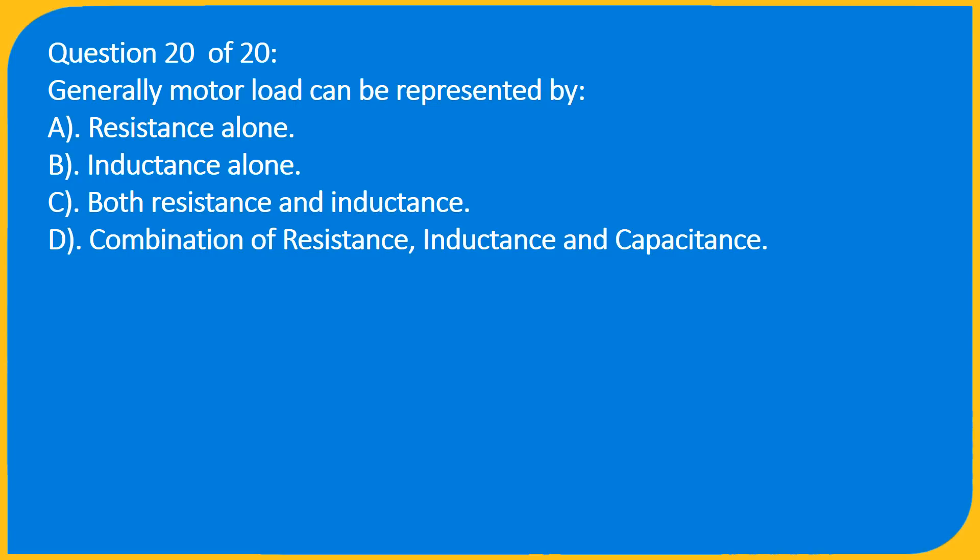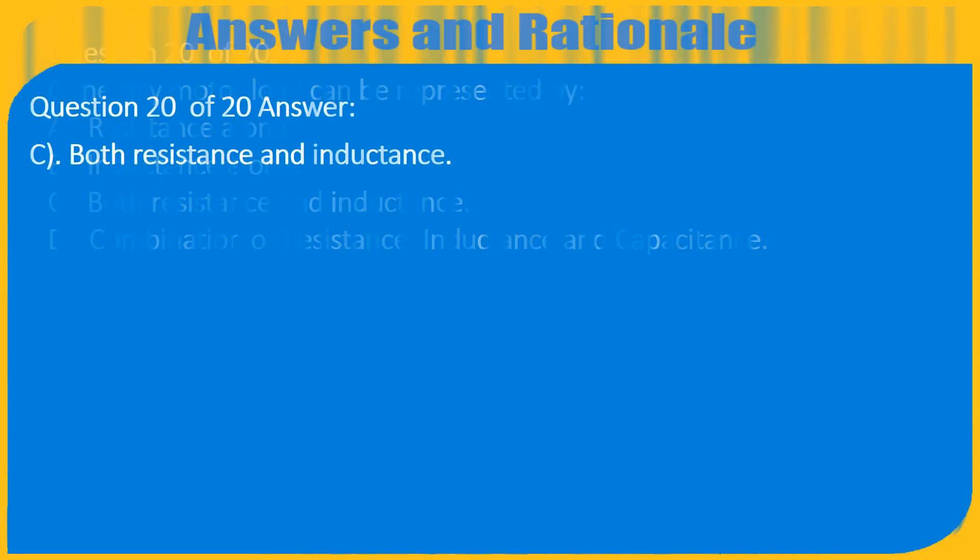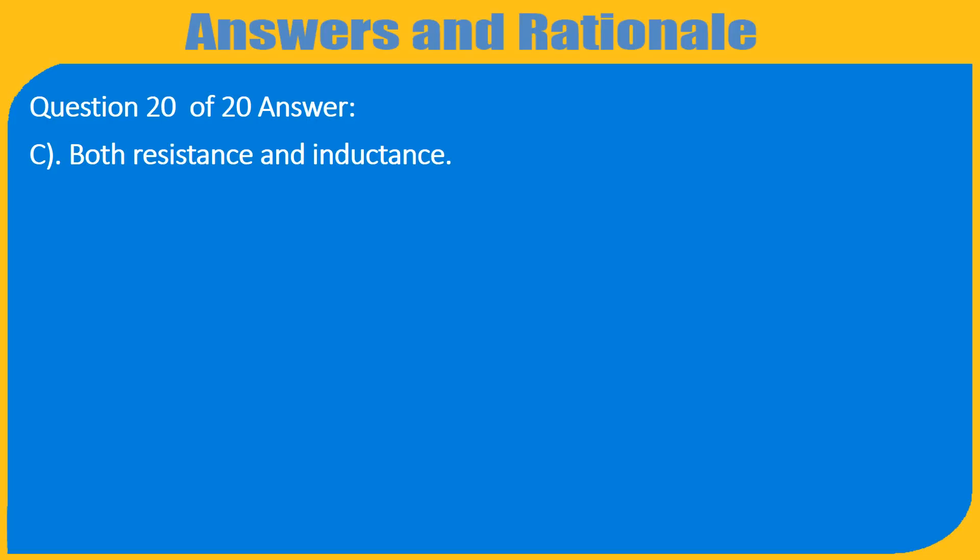Question 20 of 20: Generally, a motor load can be represented by: A. Resistance alone, B. Inductance alone, C. Both resistance and inductance, D. Combination of resistance, inductance, and capacitance. Answer: C. Both resistance and inductance.